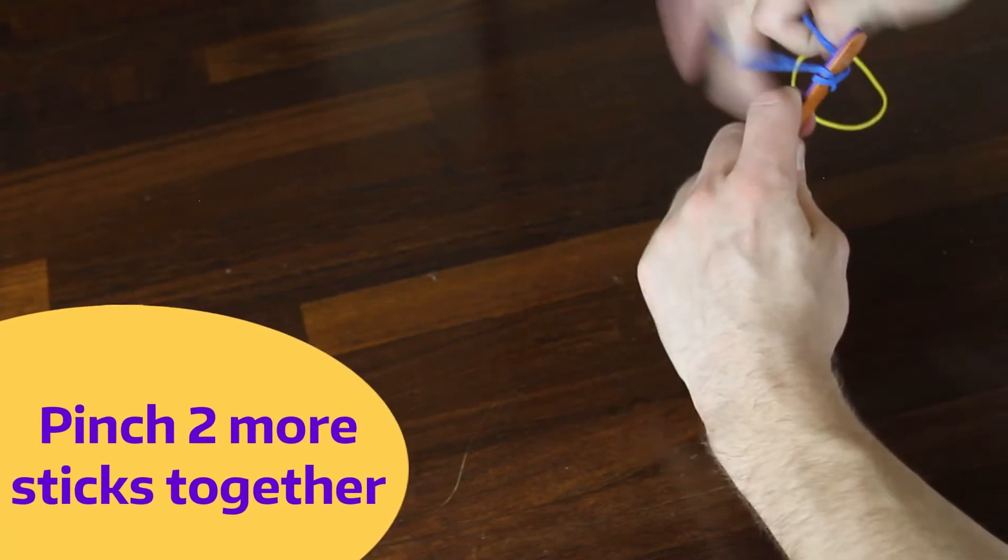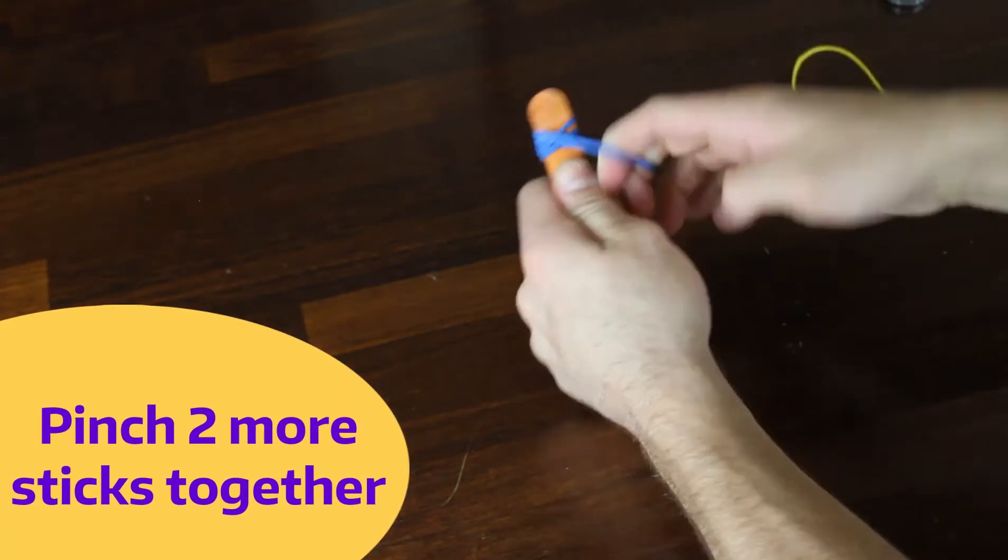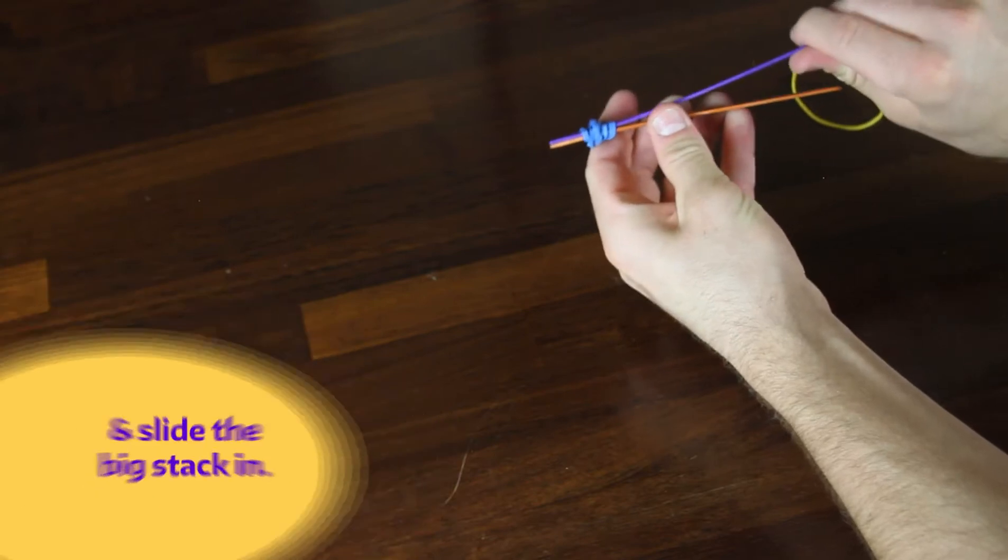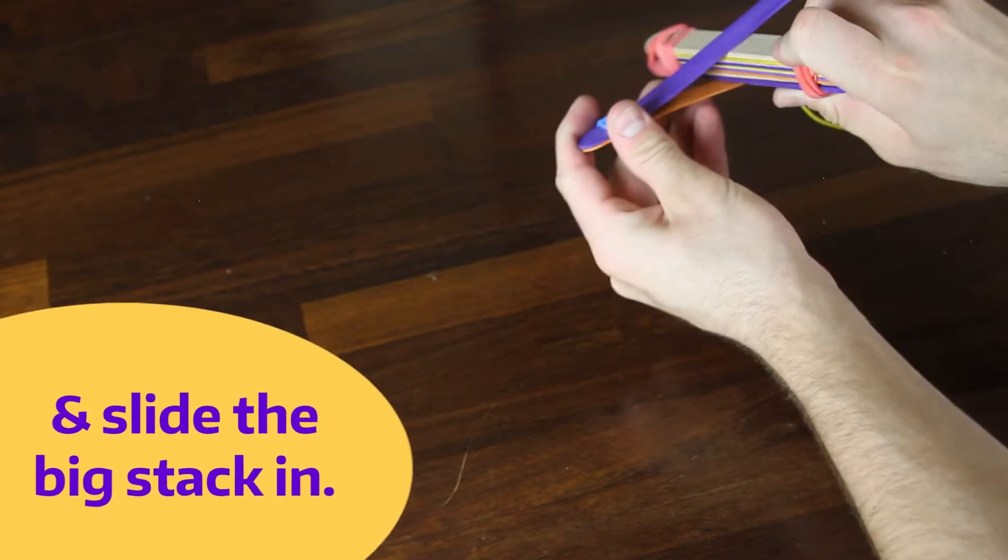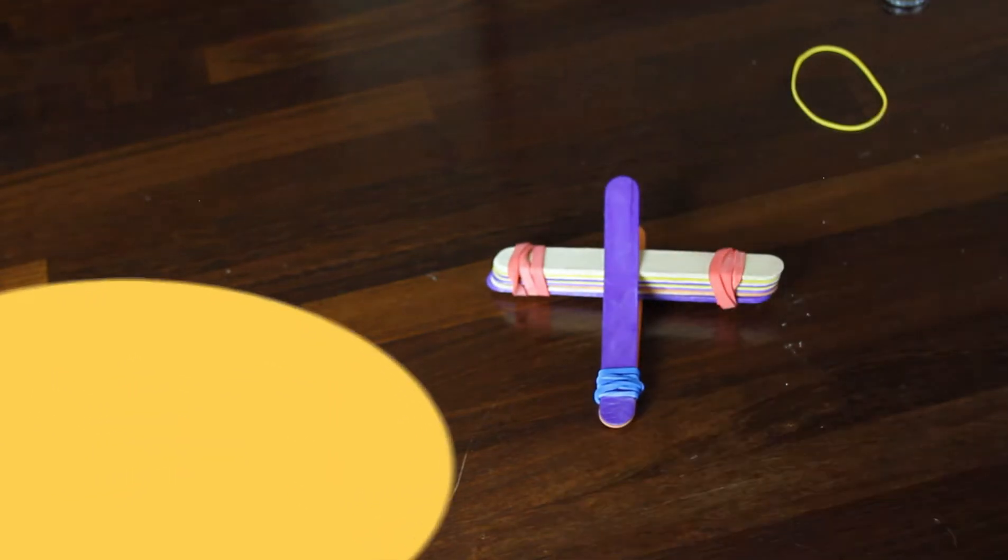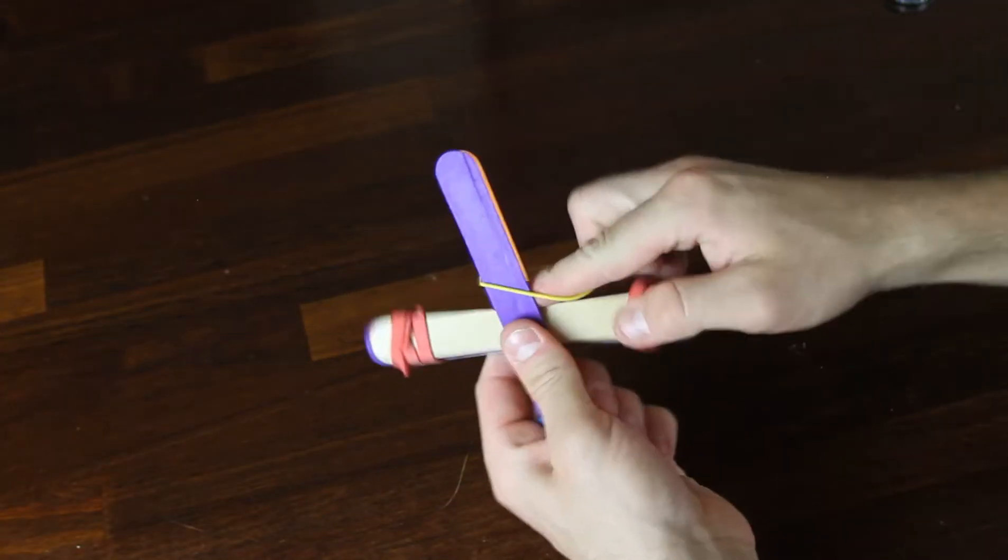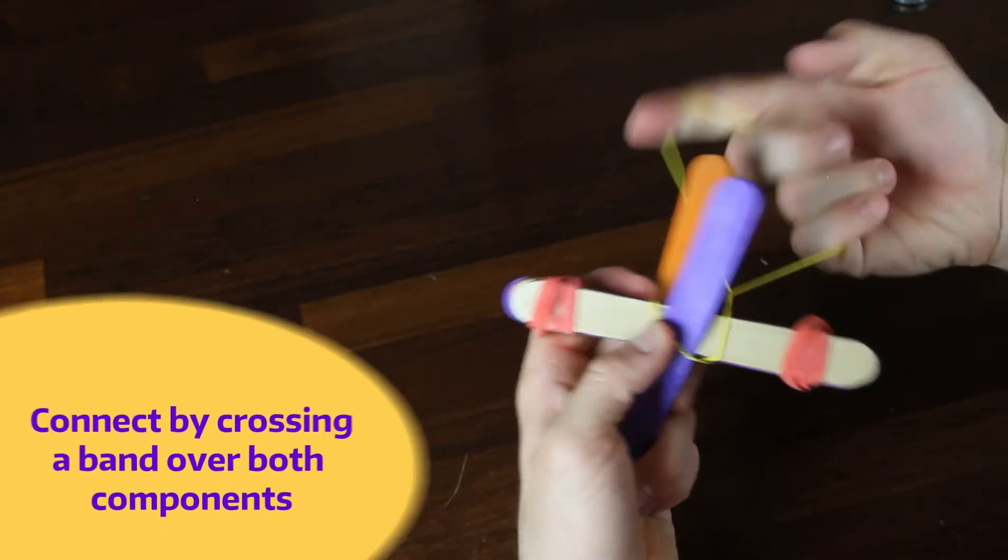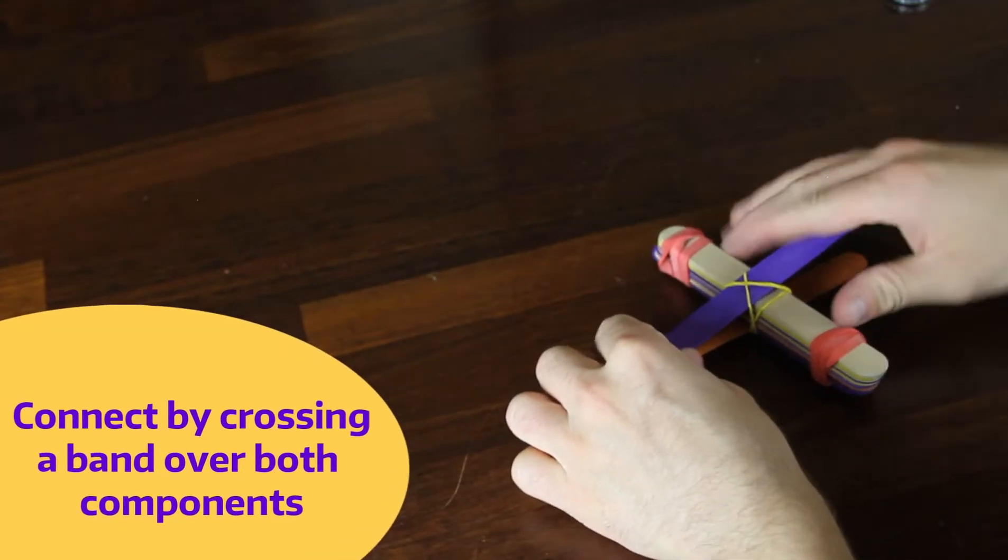Go ahead and slide the taller stack through just the two popsicle sticks, which should start to separate them. Then attempt to press them together using a rubber band.